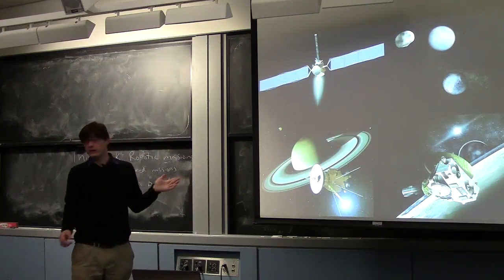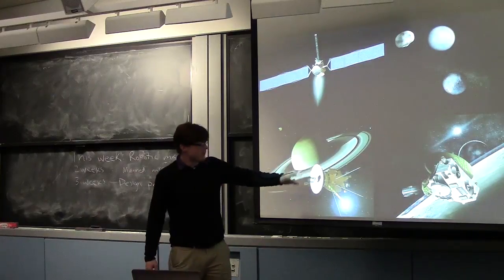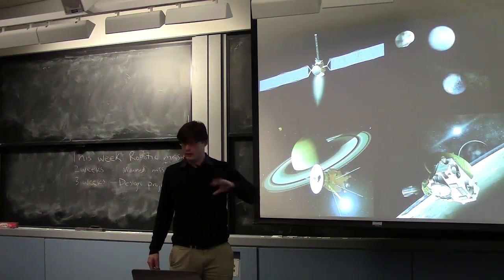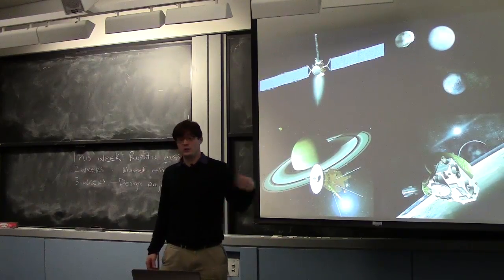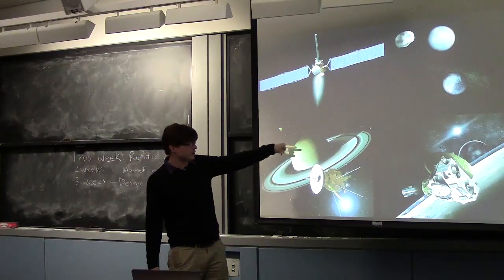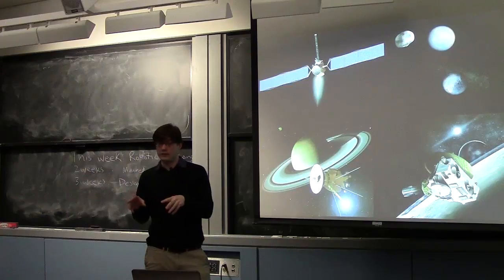These are different missions that use different types of propulsion. Cassini really just has monopropellant rockets. It got shot out by its launch vehicle, by its rocket, out to Saturn, and then it uses conventional rockets to get into orbit of Saturn and to make changes. The reason it does that is because it's near Saturn, near the gravity well, so it needs a little bit more power. It can't really use an ion engine.